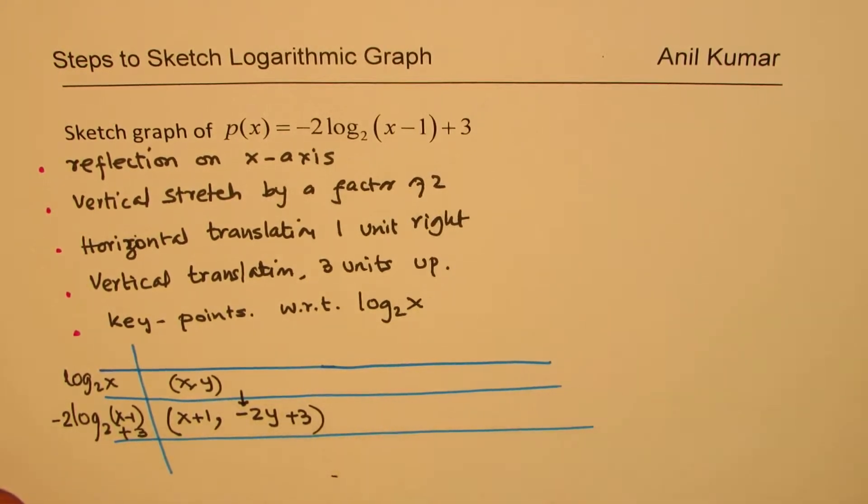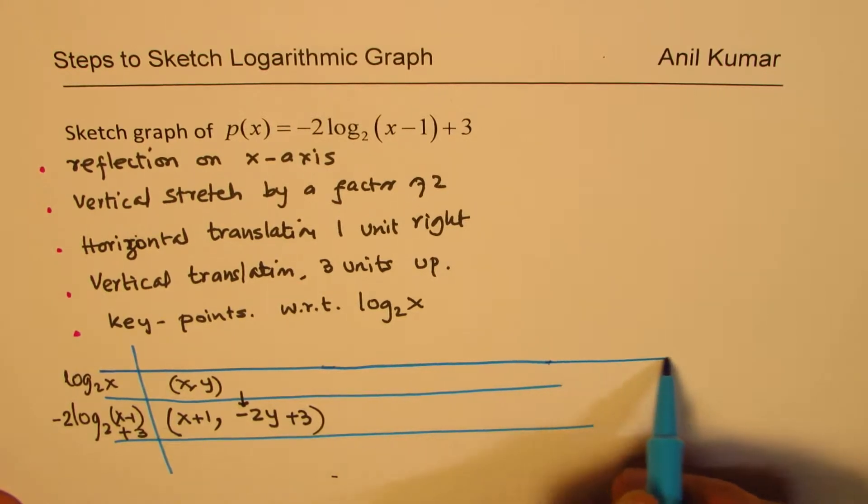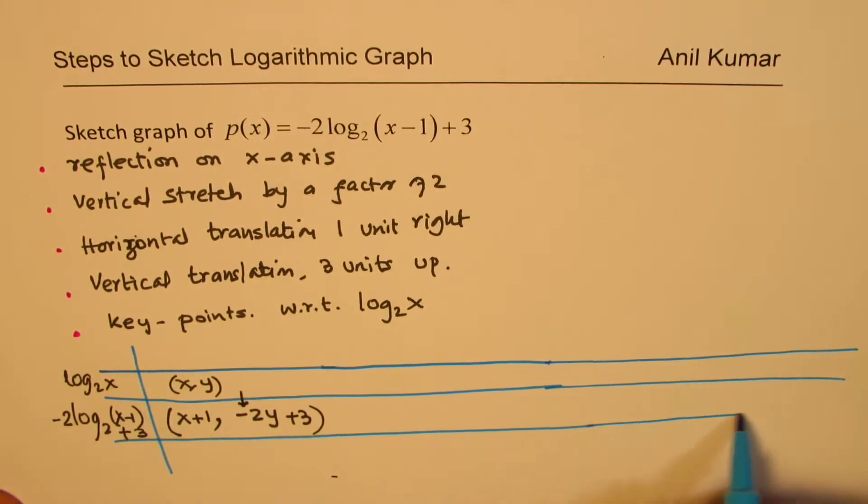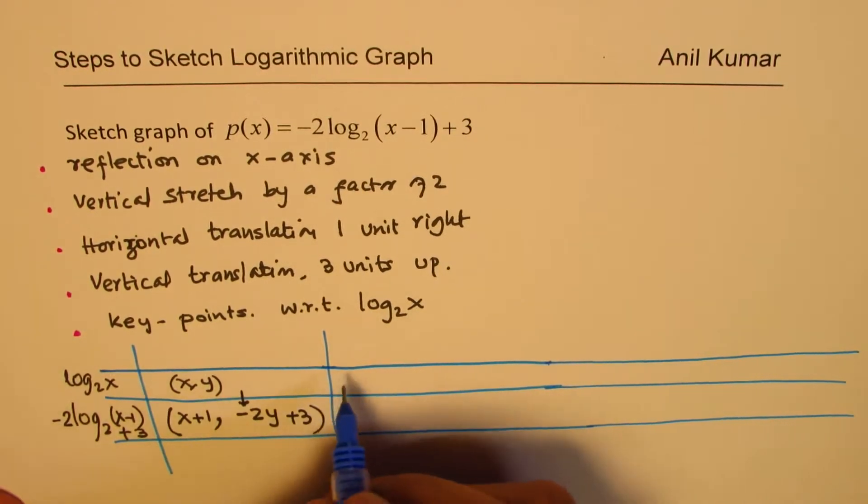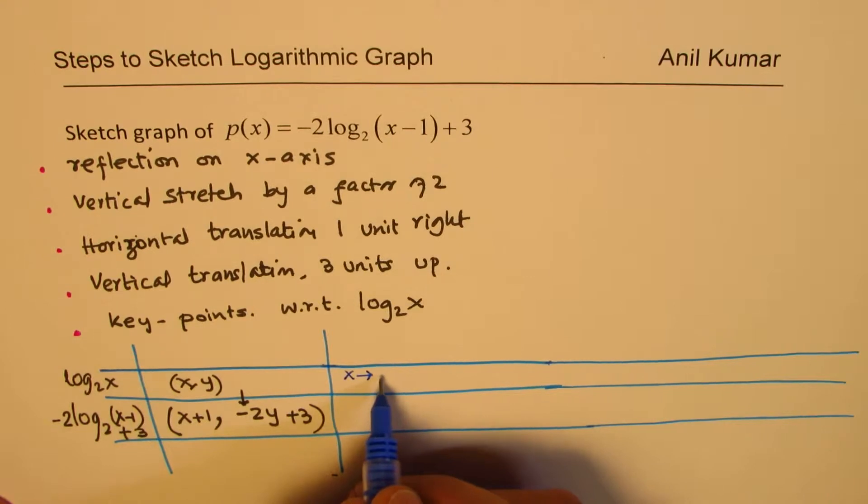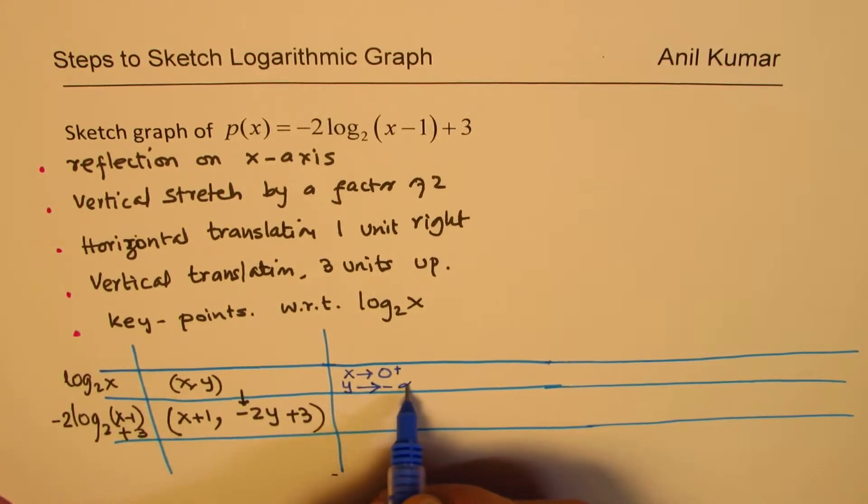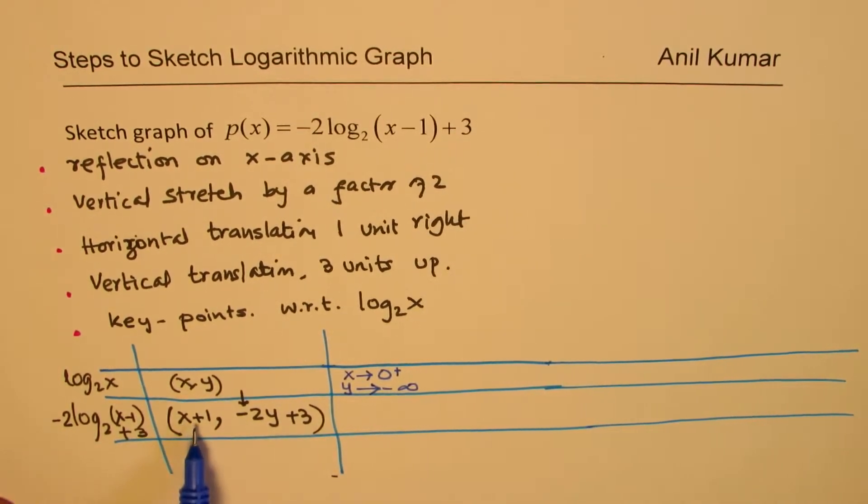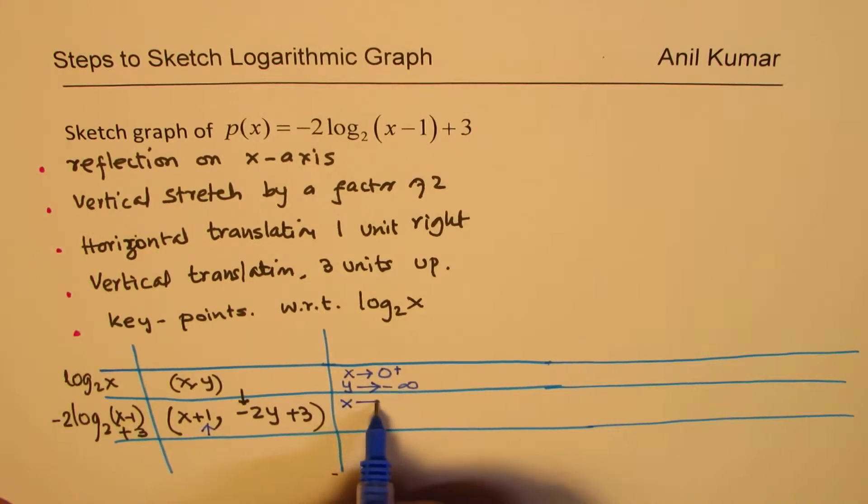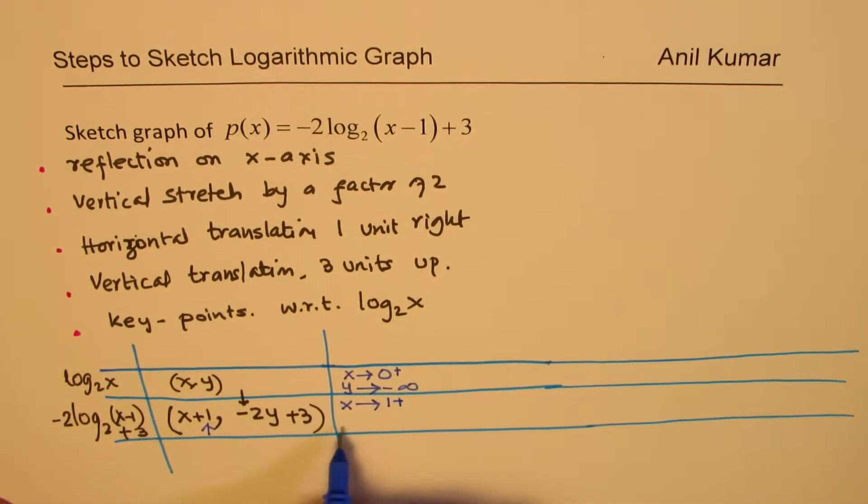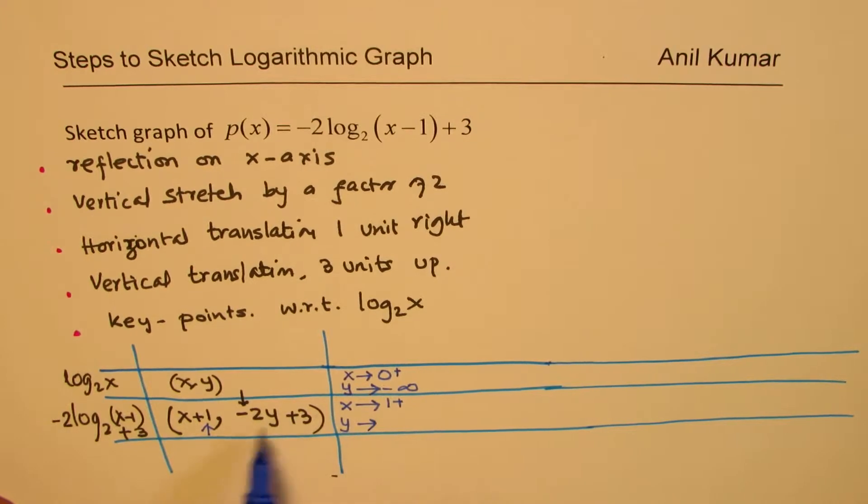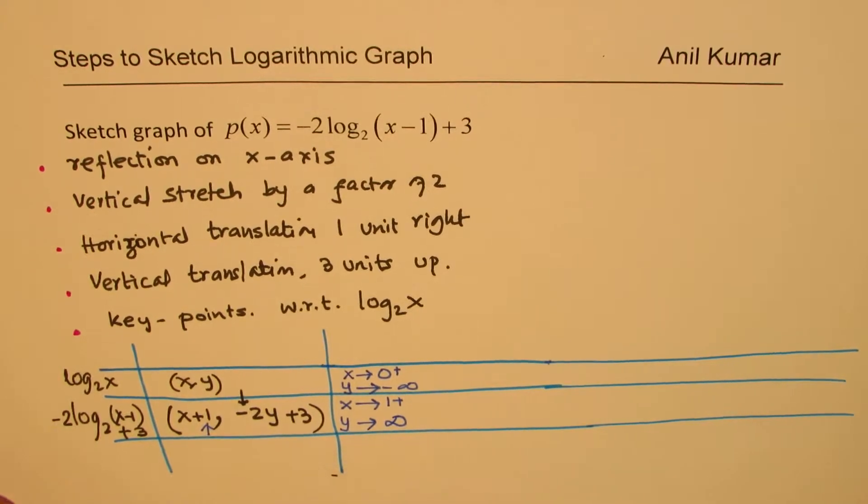So now let's look into the features. Now one of the key features is the end behavior. So when I say x is approaching for logarithmic function 0 from the positive side, y basically approaches negative infinity. Now as far as the x value is concerned we have to add 1. Do you see that addition of 1? How it plays the role? So now we are saying when x approaches 1 from positive side, y approaches what? Negative of this value, so negative 2 times that means positive infinity. So this time positive infinity.